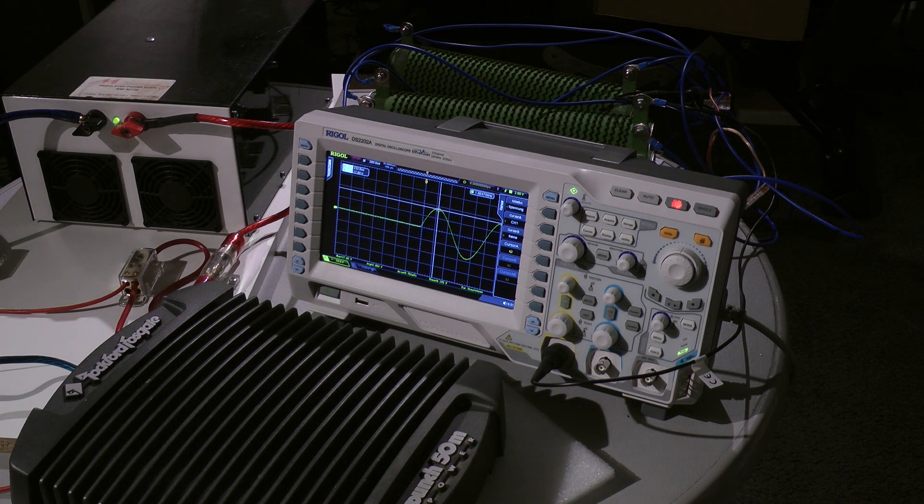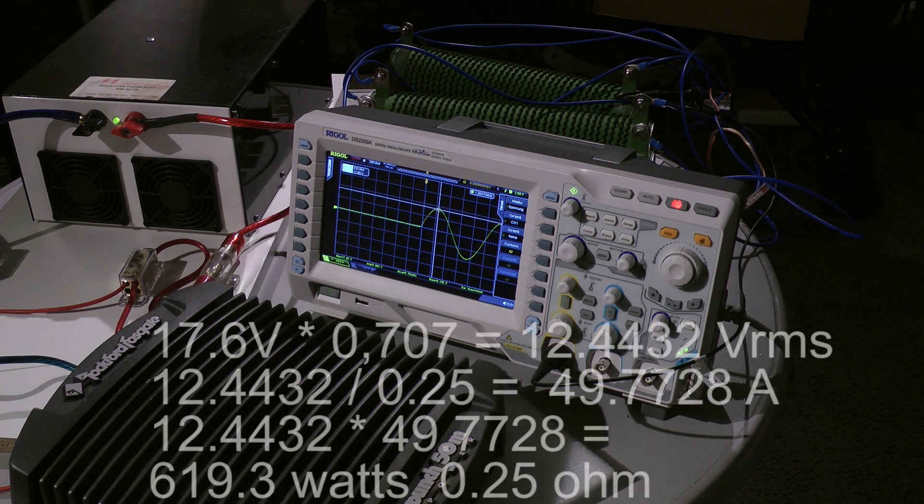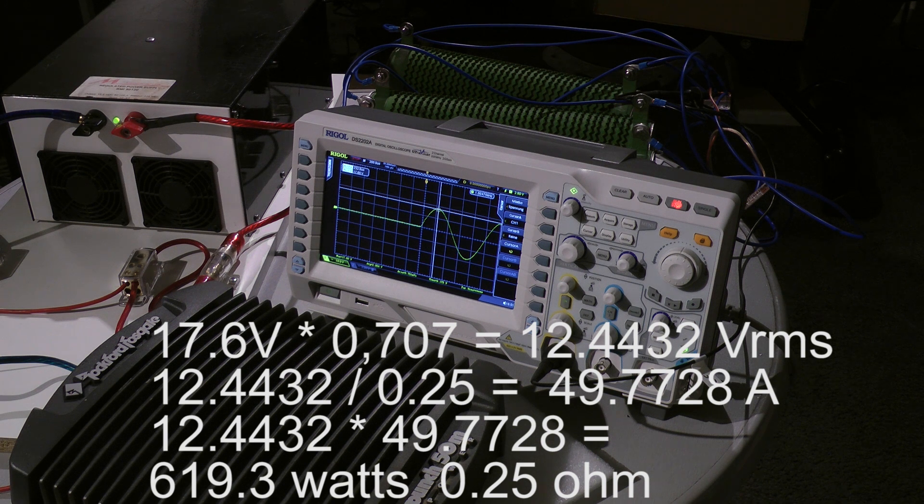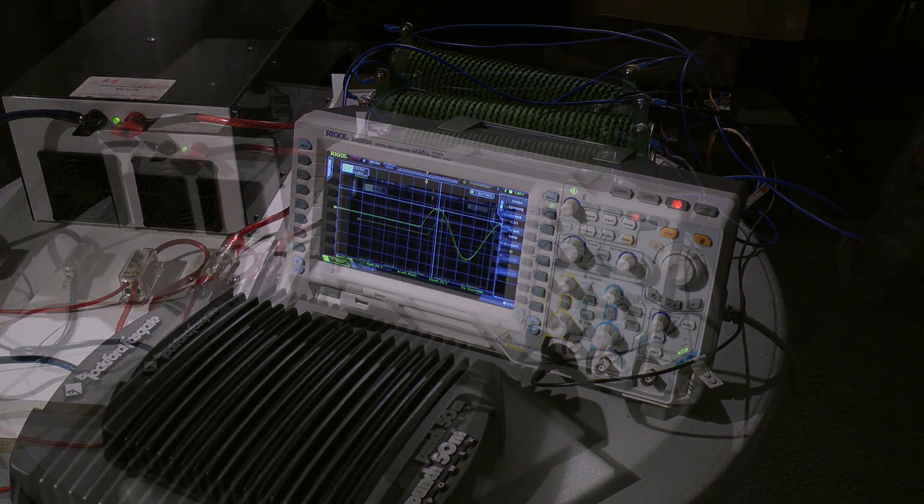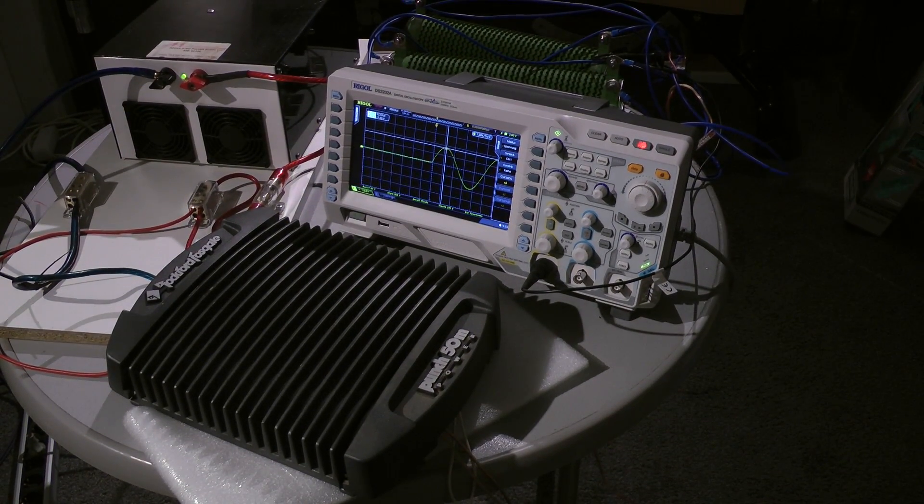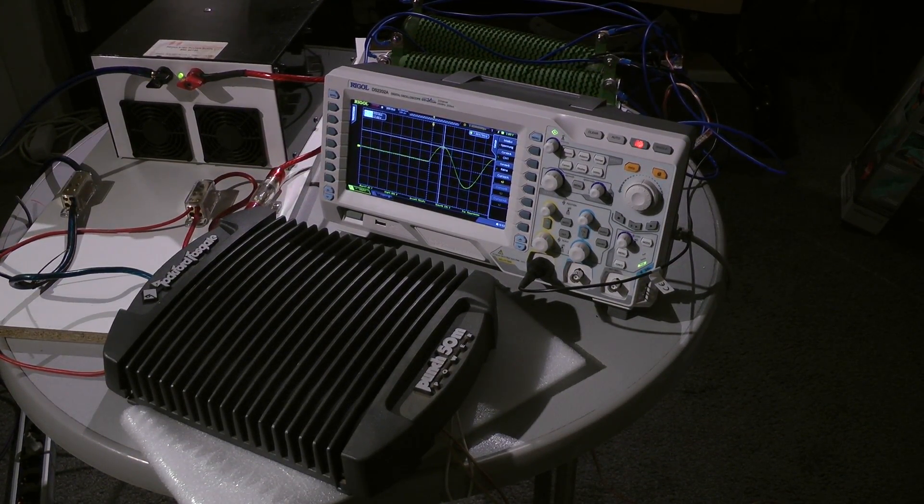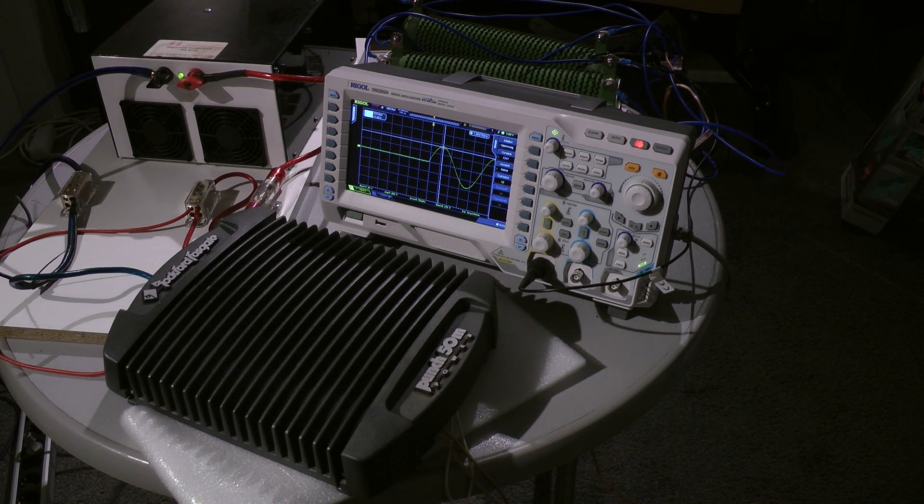We just have 12.4432 volts RMS with a quarter ohm, and this equals... it's incredible. That's 619.3 watts. Can you imagine what you can power with this amp? A big amount of speakers. 0.25 ohms on a Punch 50 amp from the power series. Yeah I'm pretty impressed.